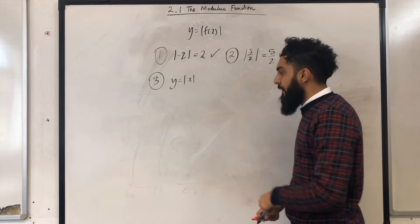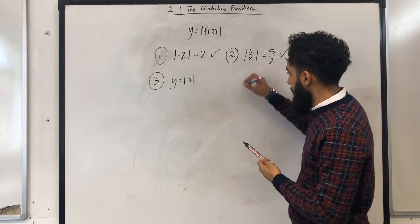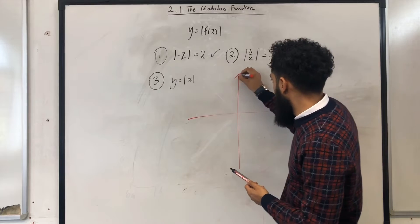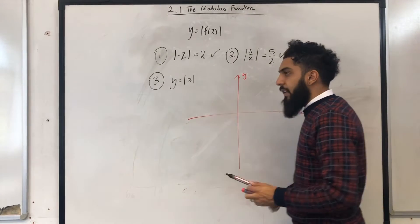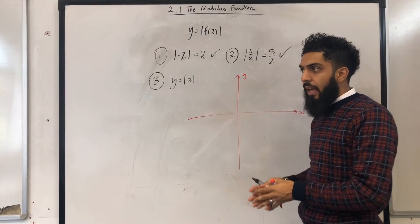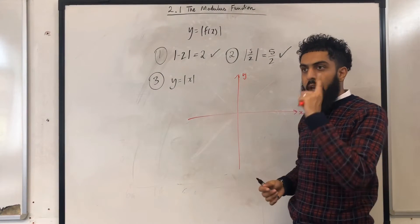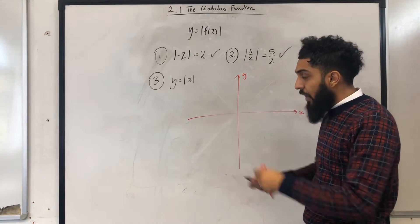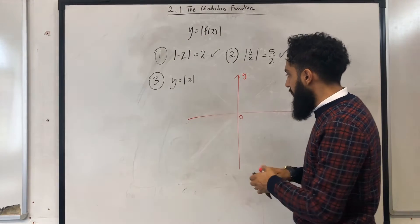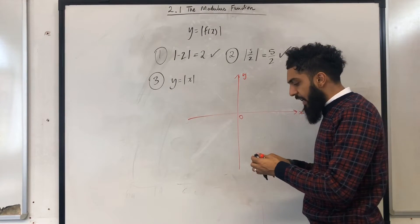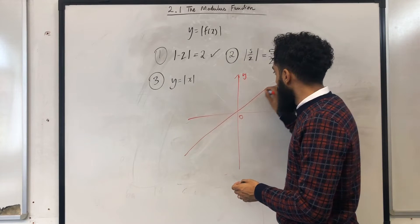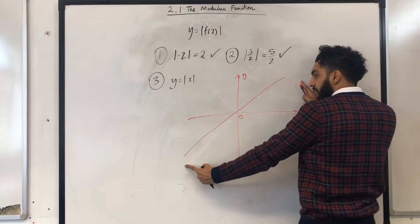Well first of all let me draw my coordinate grid. I'm going to sketch y equal to x. Y equal to x is just a straight line with a positive gradient, and the gradient is 1, and it also passes through the origin. So here's the origin. I can sketch in y equal to x. That is y equal to x.